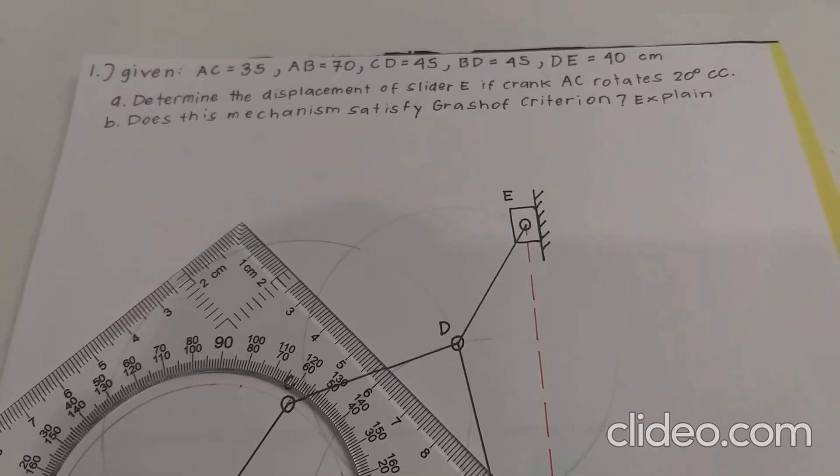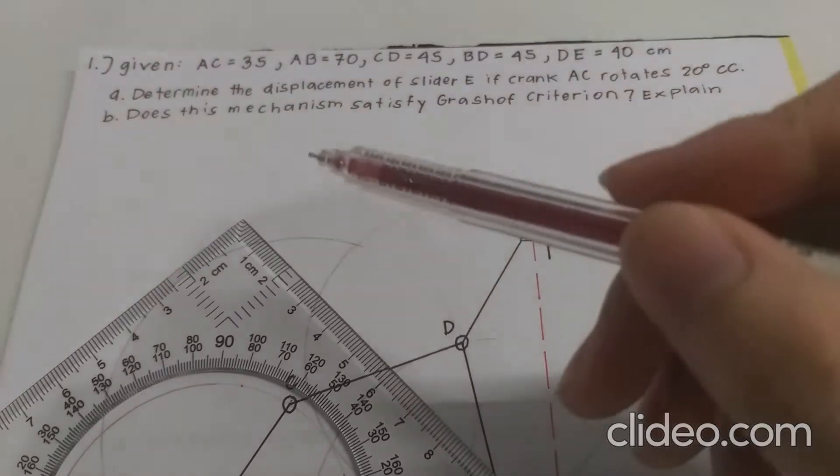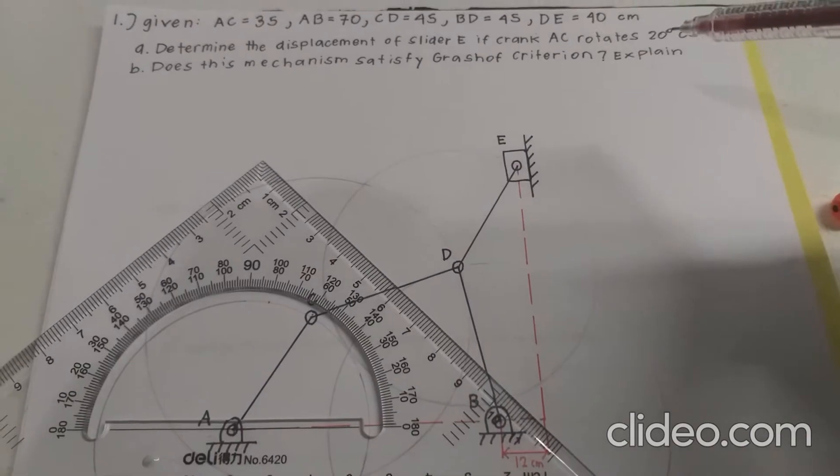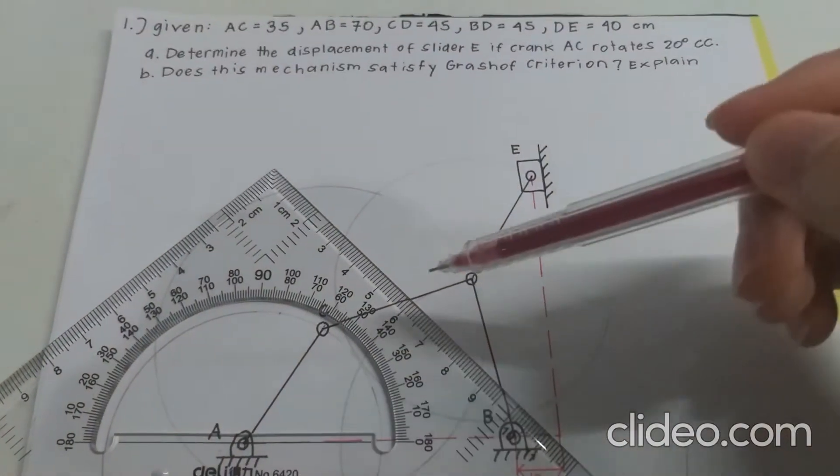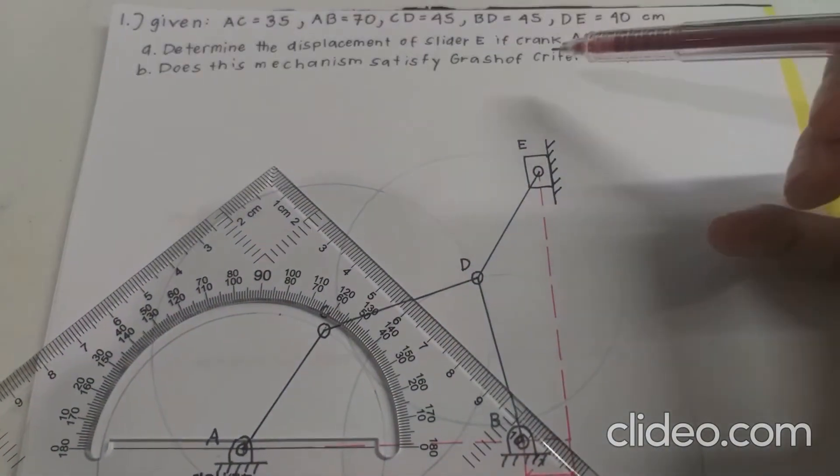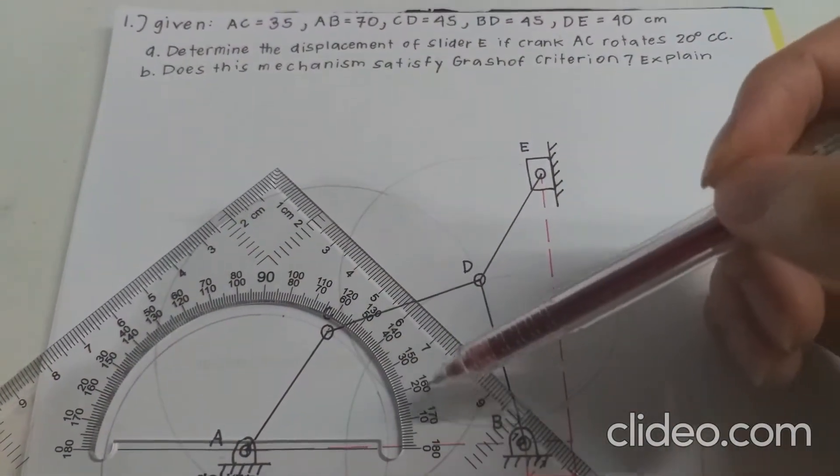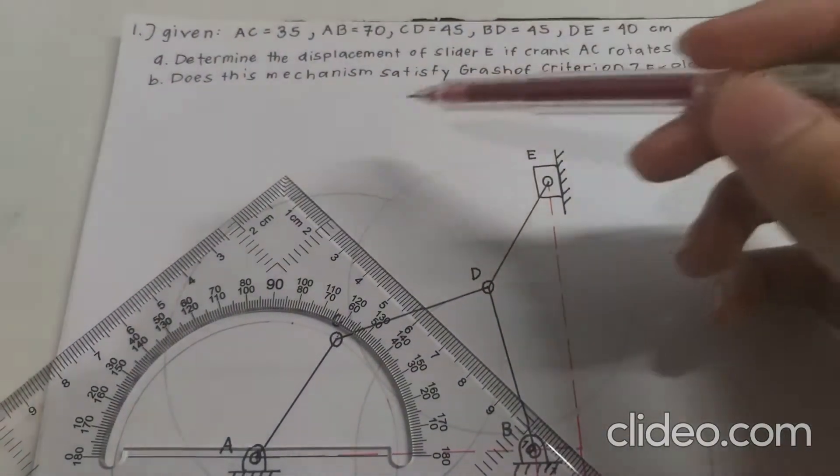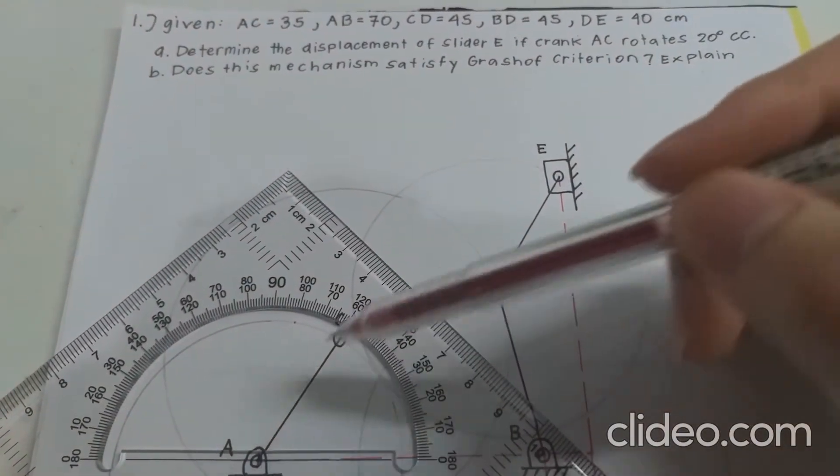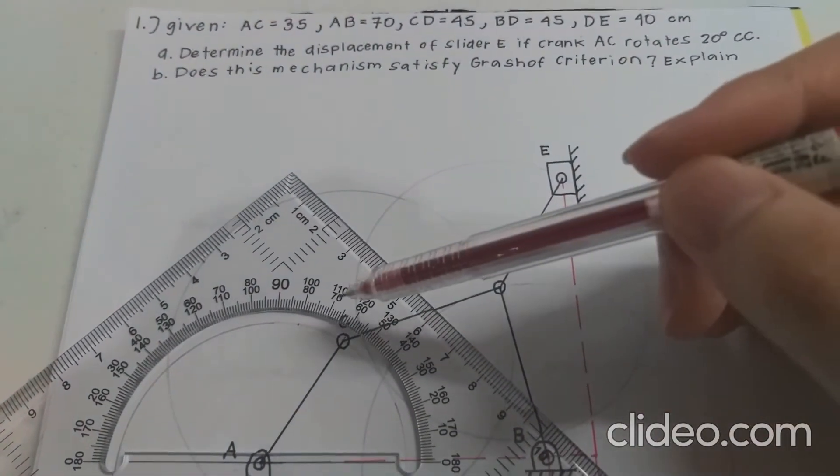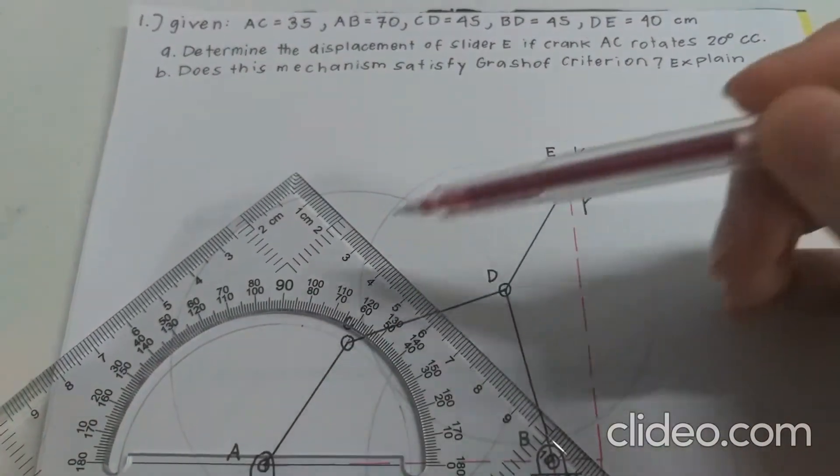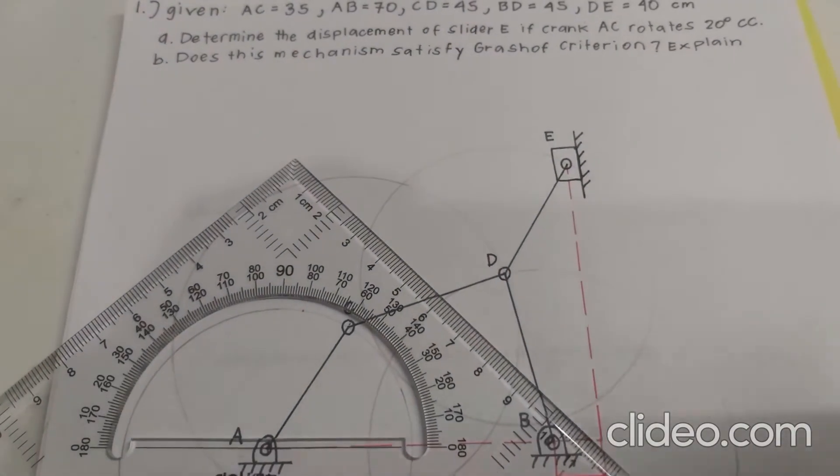So the first thing that's being asked is to determine the displacement of slider E if crank AC rotates 20 degrees counterclockwise. So the original degrees of measurement from the base of crank AC measures 60 degrees. So we need to determine the displacement of E when this link AC is now 20 degrees clockwise from its original position.